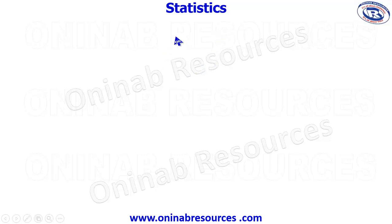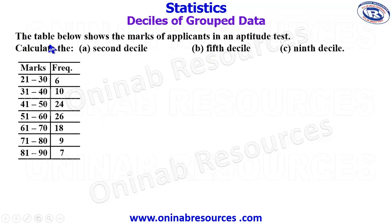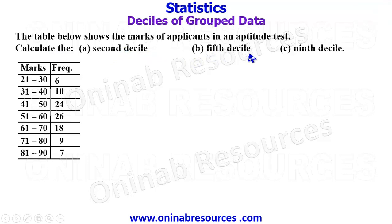Hello and welcome to this tutorial on statistics. In this video we'll be looking at the size of grouped data. The table below shows the marks of applicants in an aptitude test. We need to calculate the second decile, fifth decile, and ninth decile. By decile, we're talking about dividing the data set into 10 equal parts, giving us various points.